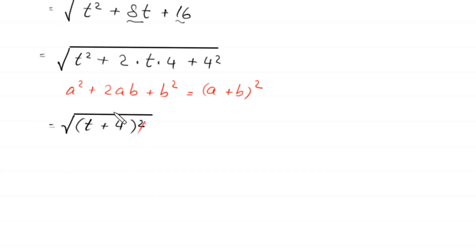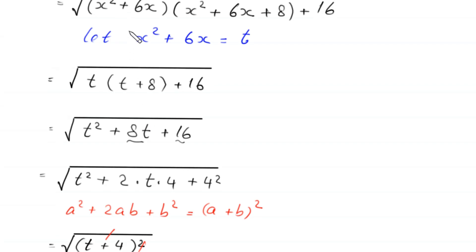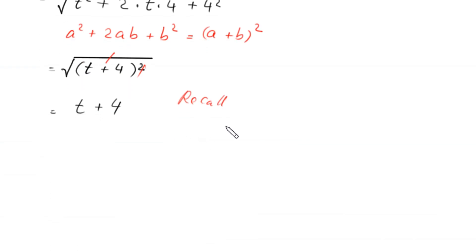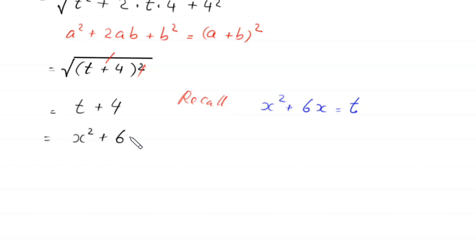Now, the square cancels with the square root and we are left with t+4. Recalling that x²+6x = t, this becomes x²+6x+4.